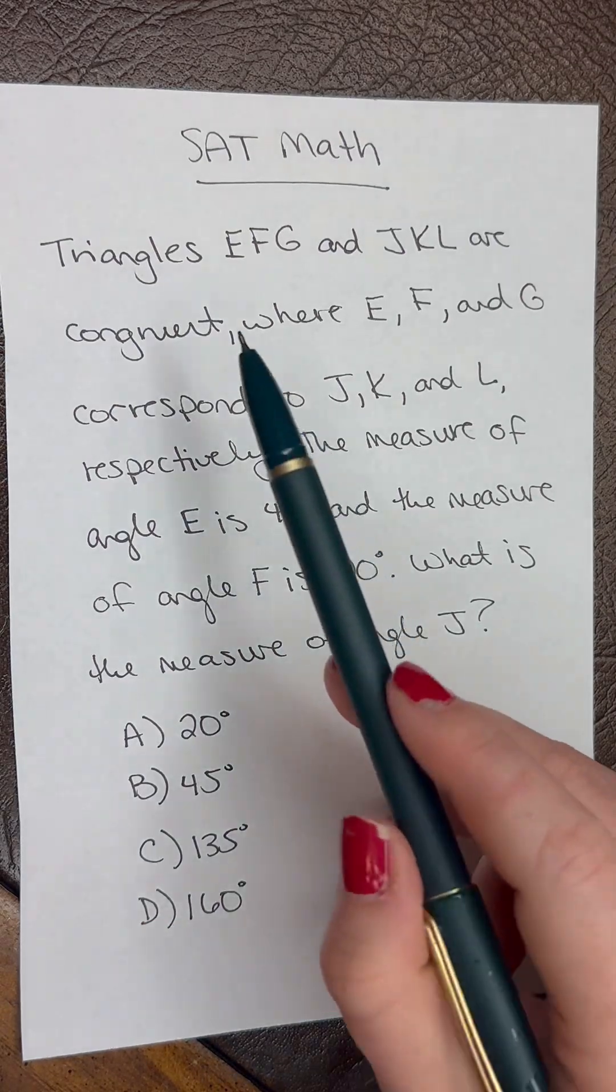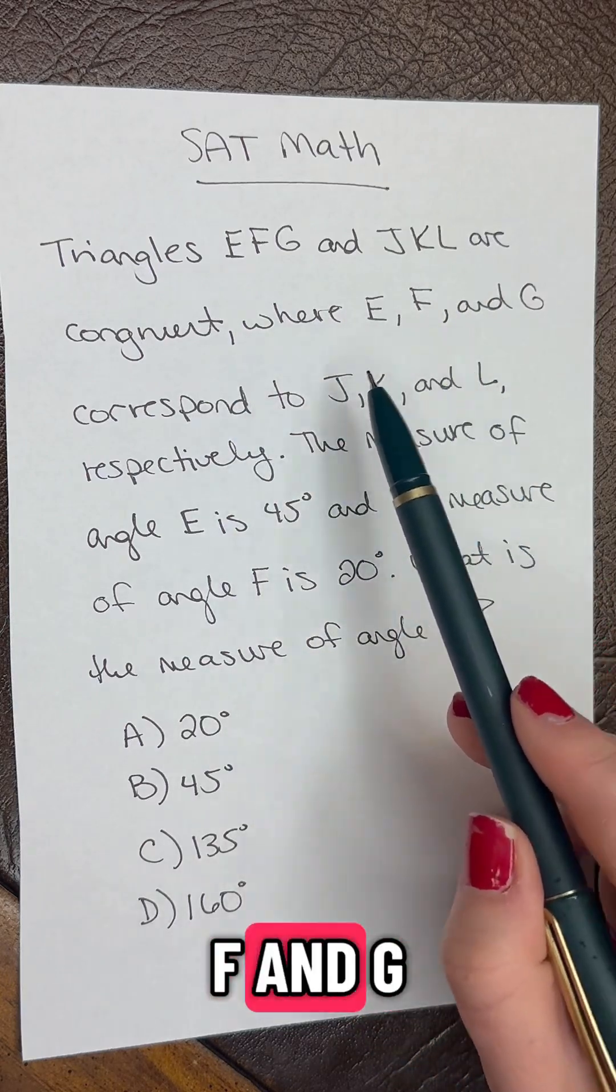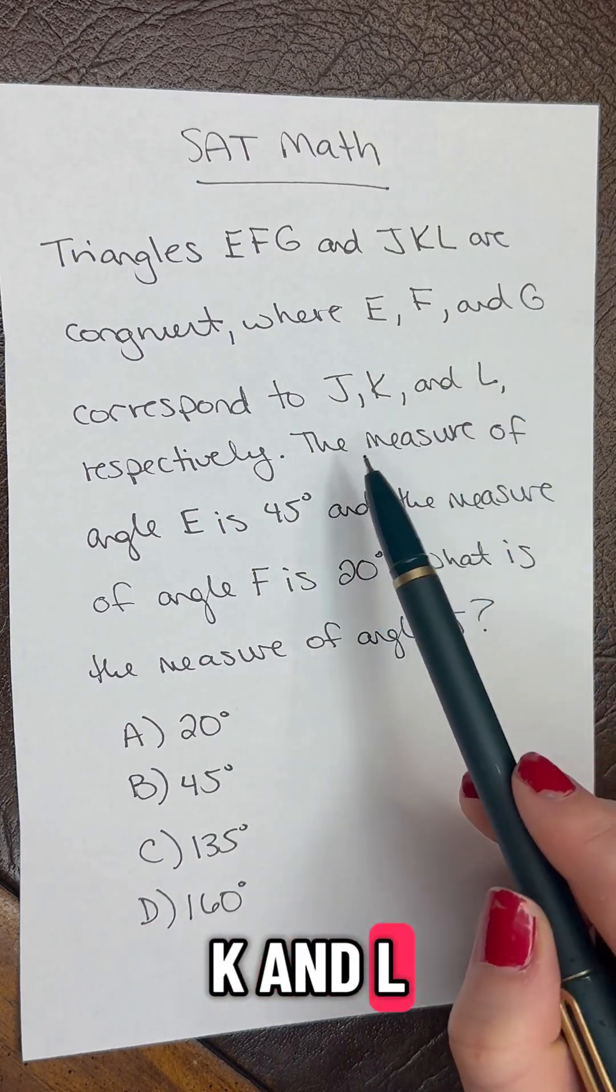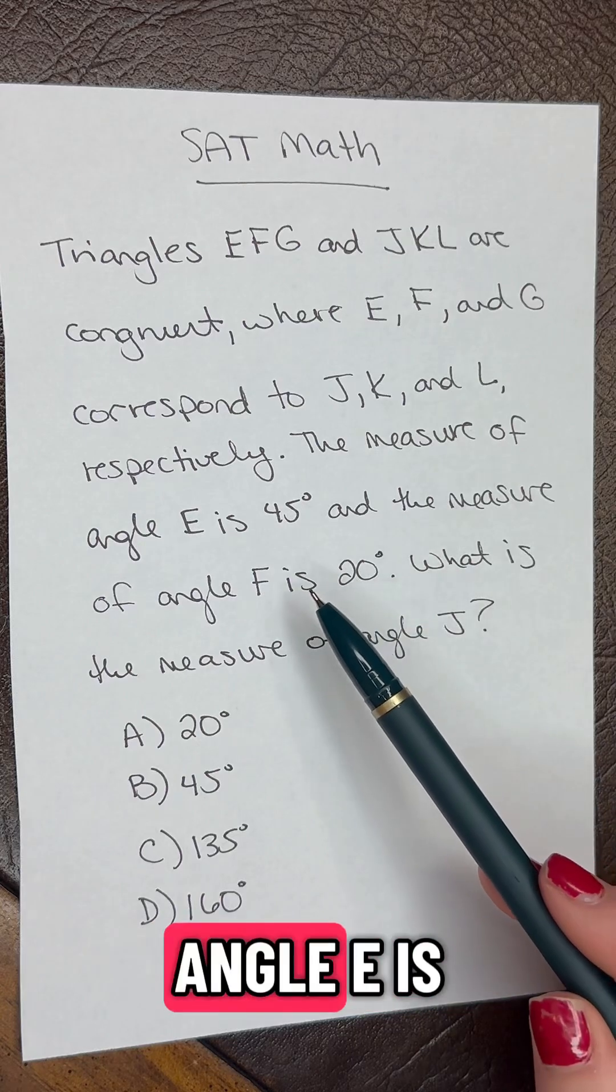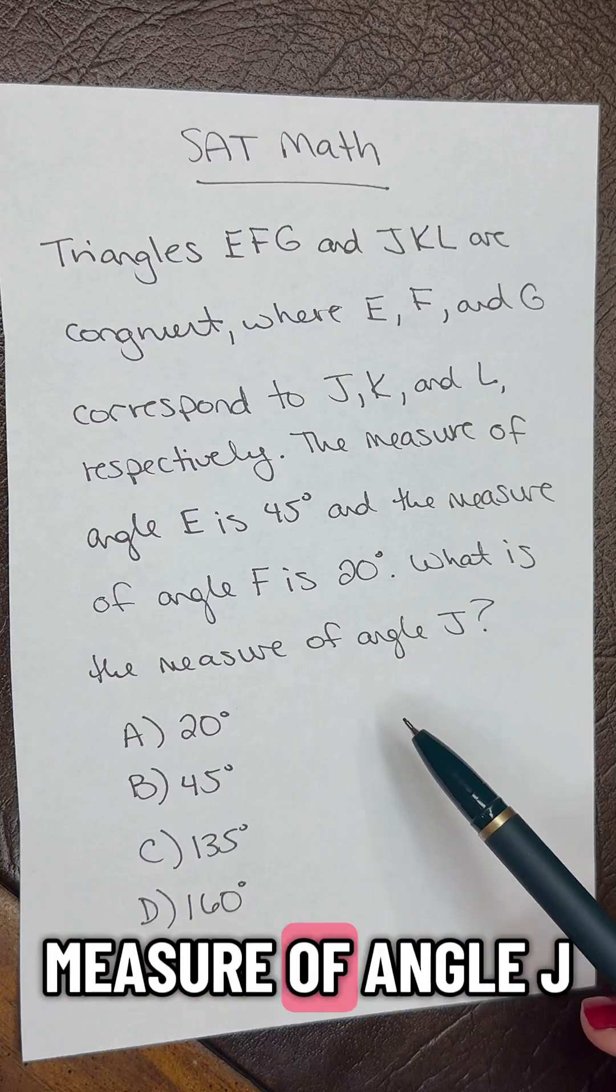SAT math question of the day. Triangles EFG and JKL are congruent, where E, F, and G correspond to J, K, and L respectively. The measure of angle E is 45 degrees and the measure of angle F is 20 degrees. What is the measure of angle J?